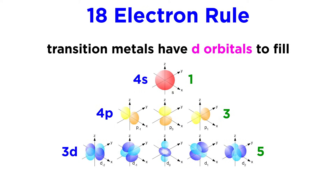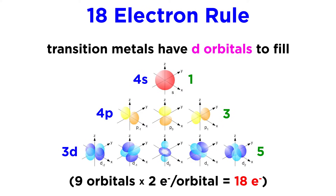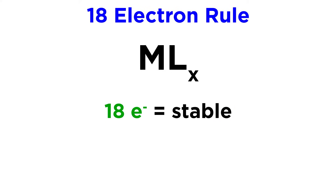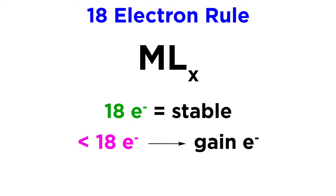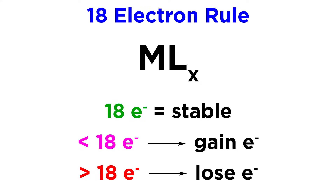But with transition metals there is now a tendency towards filling the d subshell as well, and with five d orbitals per energy level, that's another ten electrons that can be accommodated, so transition metals will seek to be surrounded by eighteen electrons. This will be a particularly stable situation thermodynamically, and complexes with fewer than eighteen electrons will often react in ways that lead to eighteen electron counts, while complexes with more than eighteen tend to be unstable and react in ways that reduce their electron count.